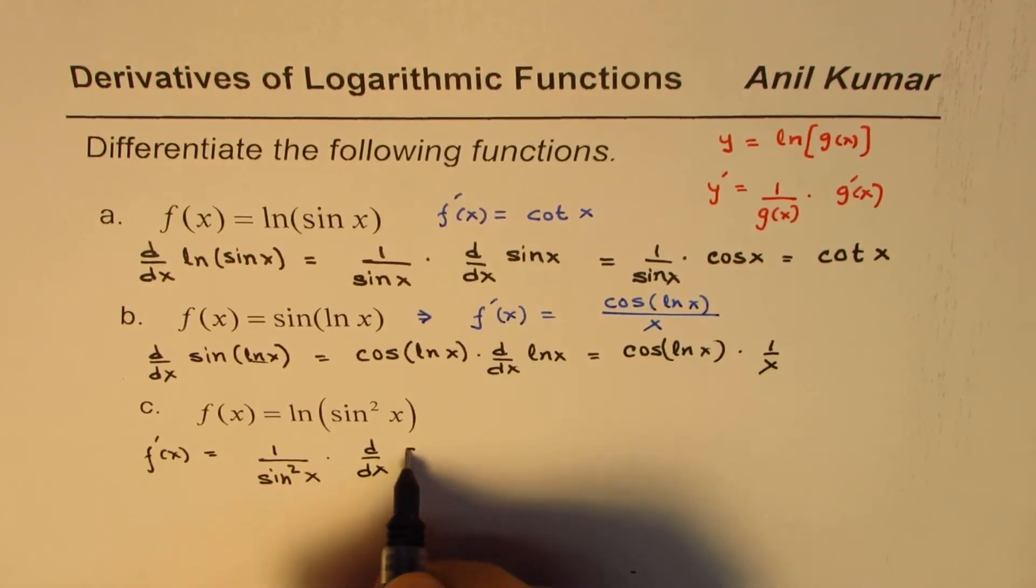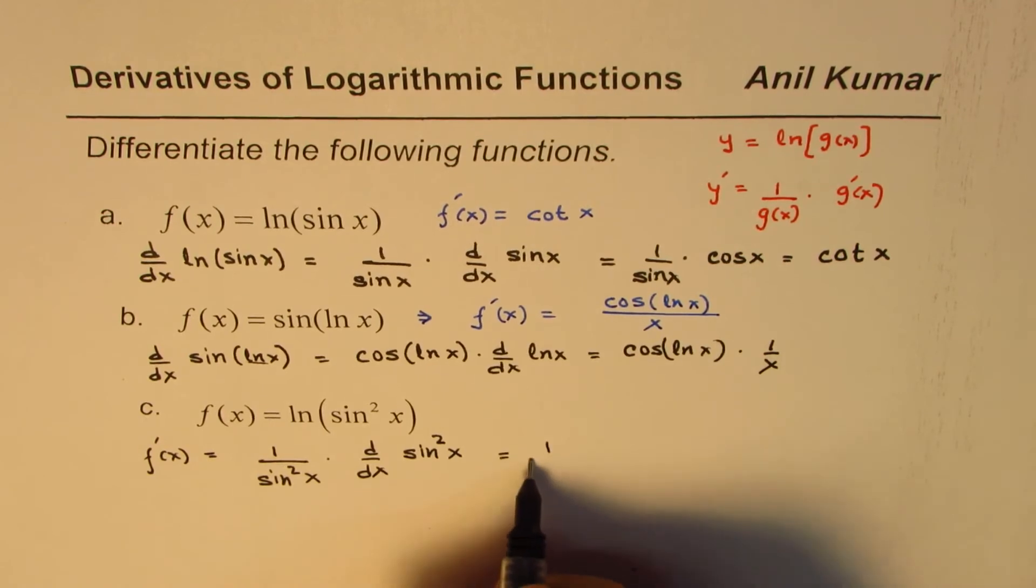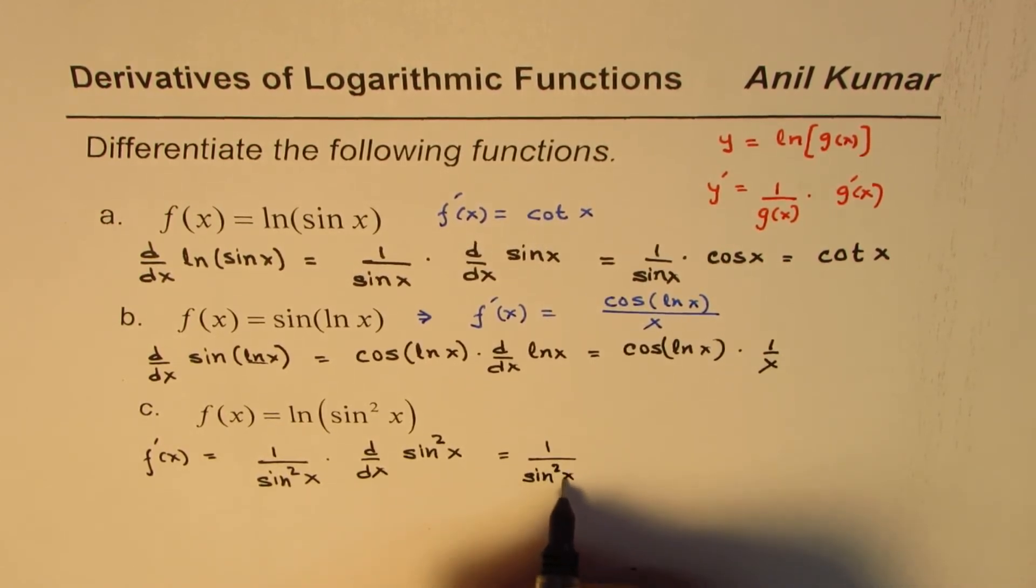Let me write d dx of sine square x. That is equal to 1 over sine square x times.